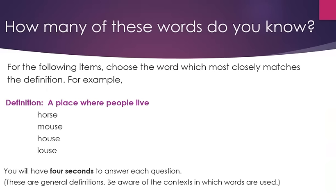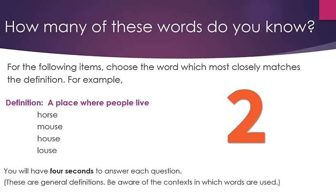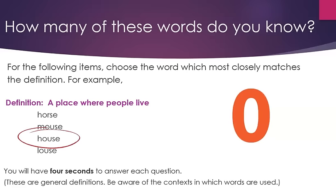For the following items, choose the word which most closely matches the definition. For example, definition: a place where people live. Horse, mouse, house, louse. You will have four seconds to answer each question. These are general definitions. Be aware of the context in which words are used. Ready to begin?